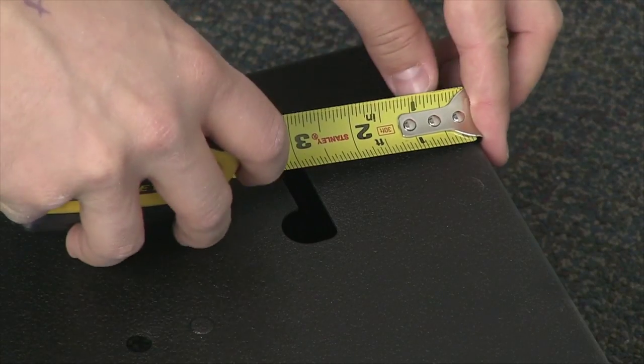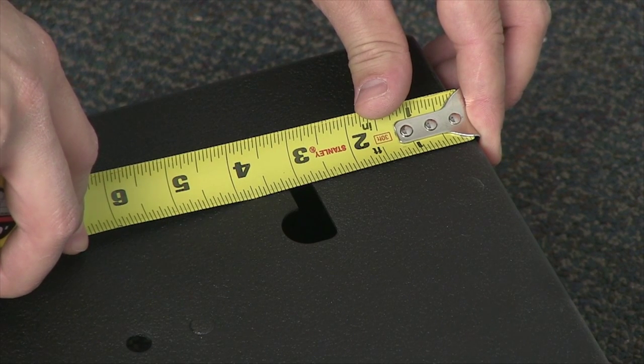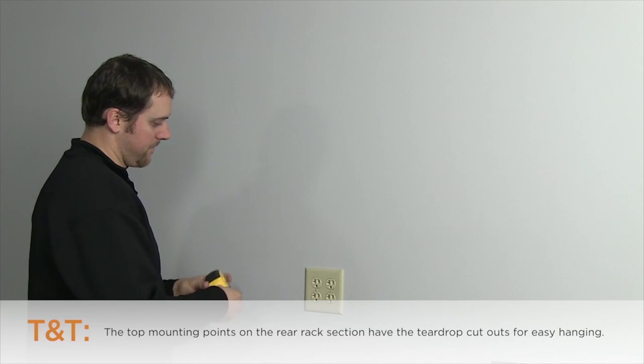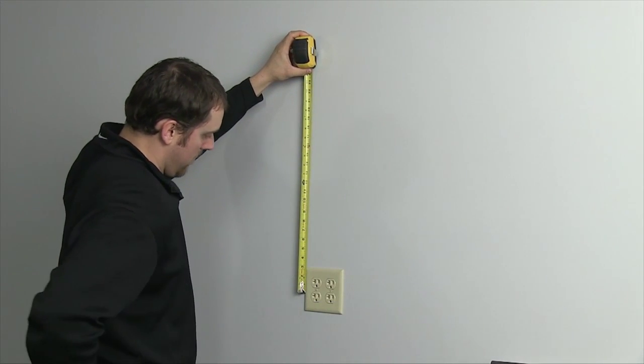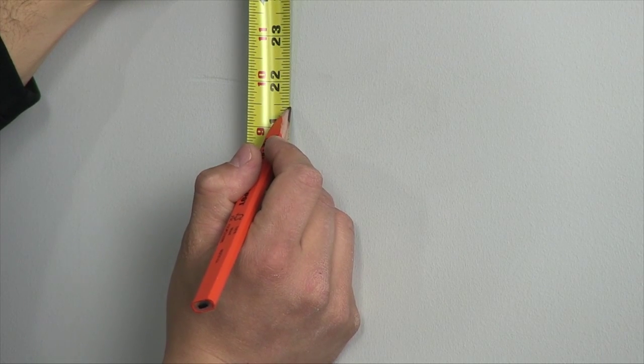Then to locate the upper mounting points, again measure from the top edge of the rear rack section. Now use the measurement taken for the center line of the rack and subtract the measurement for the upper mounting point.